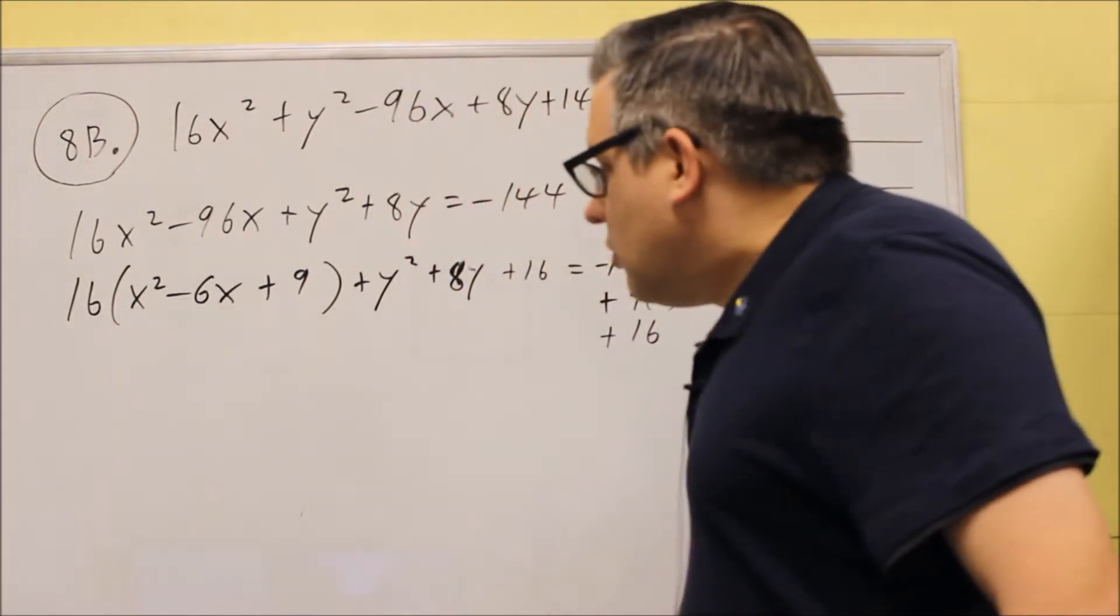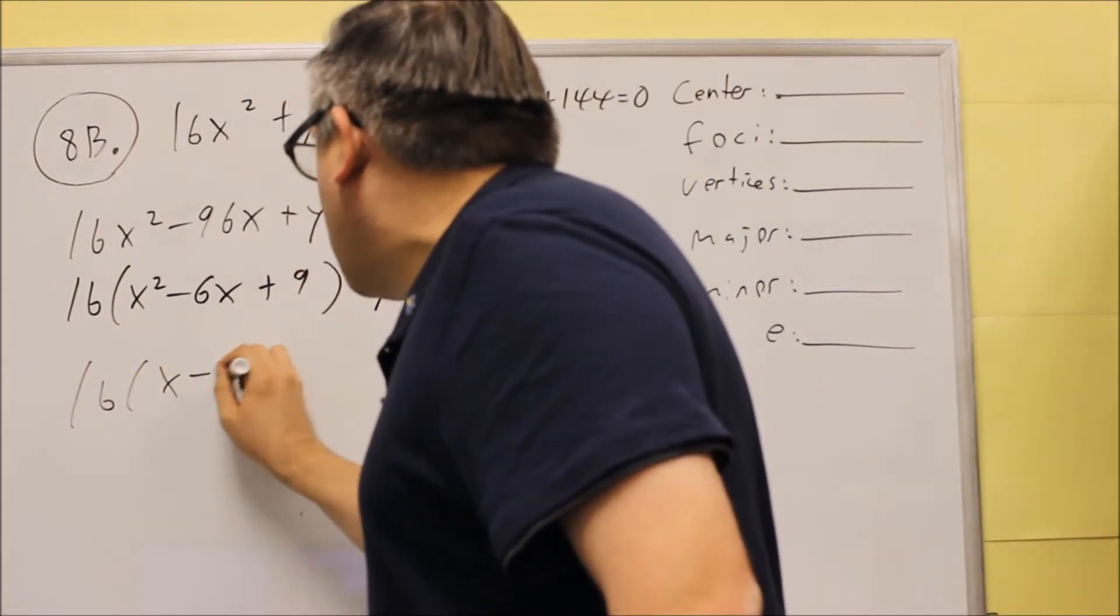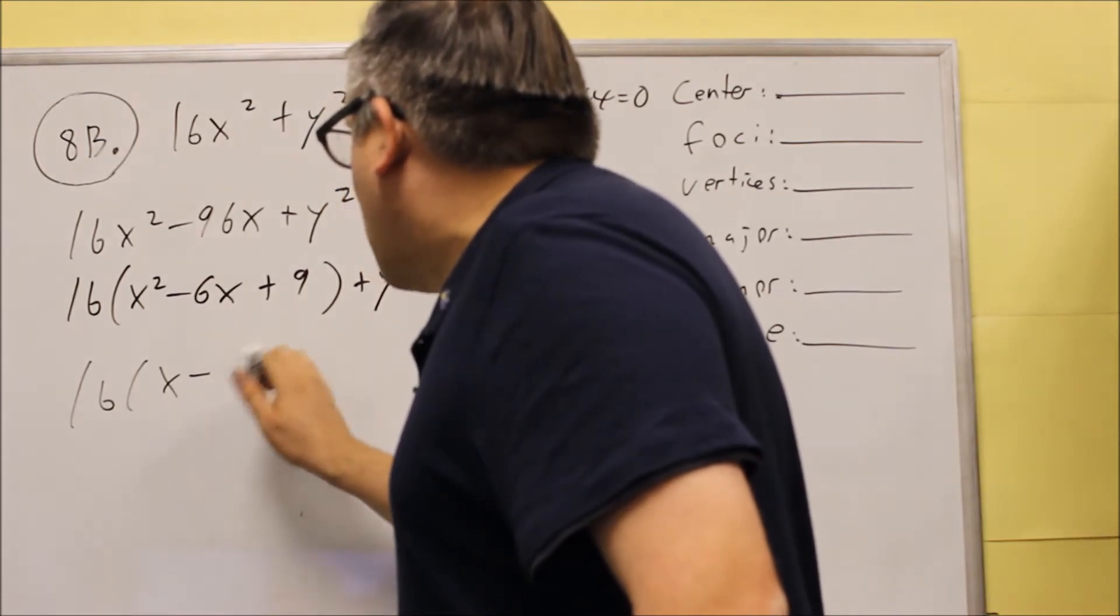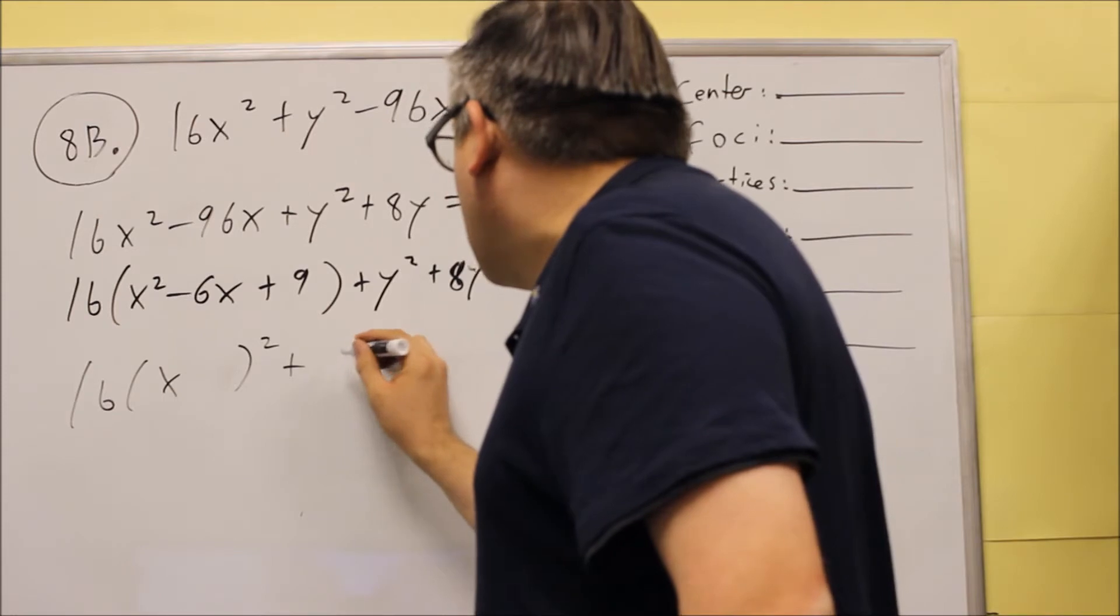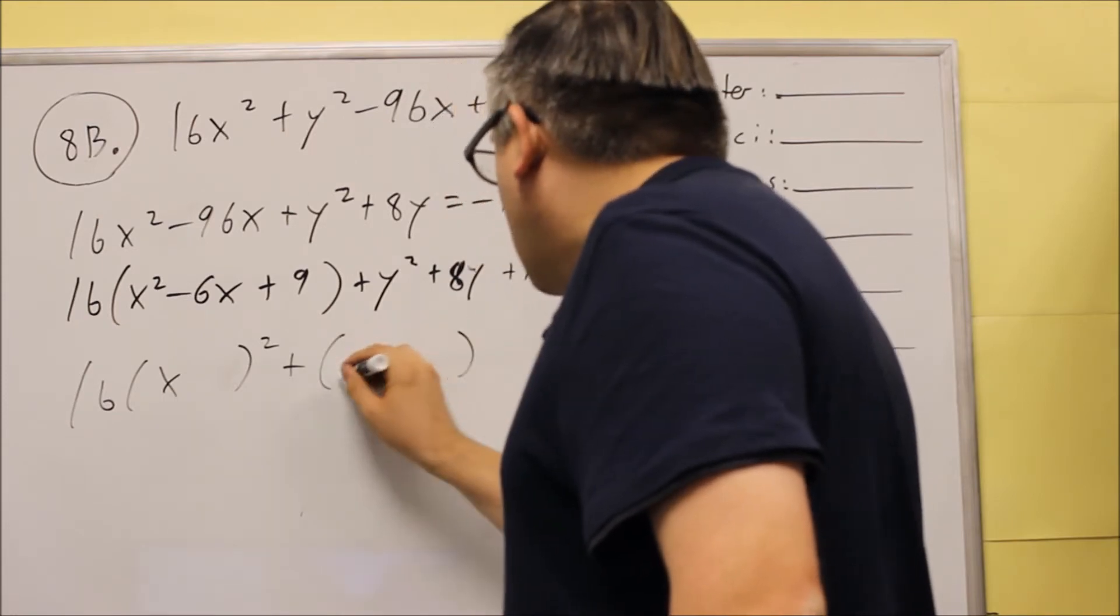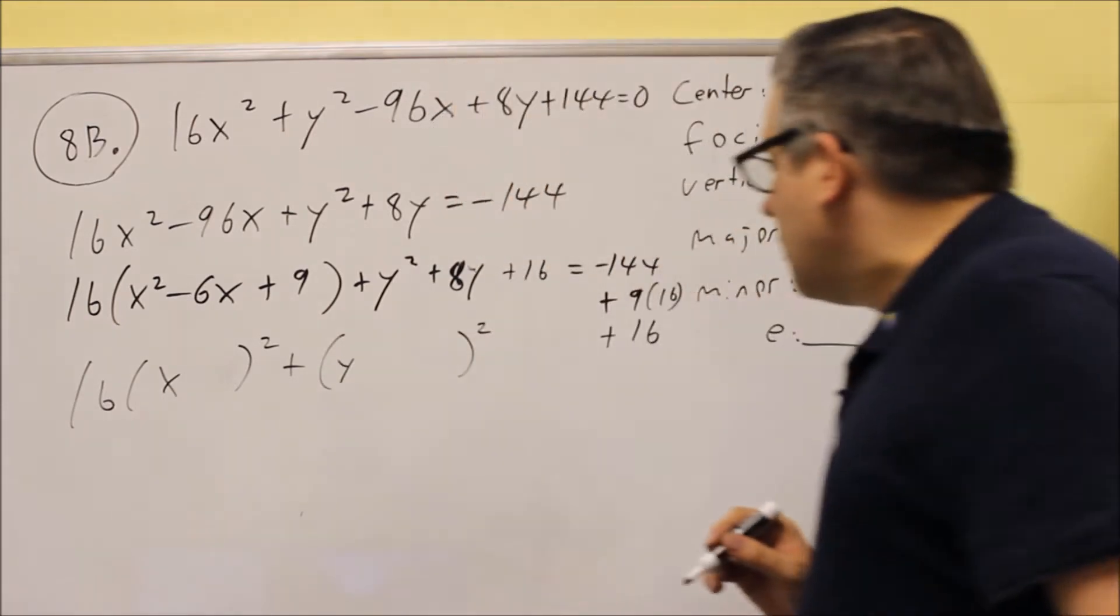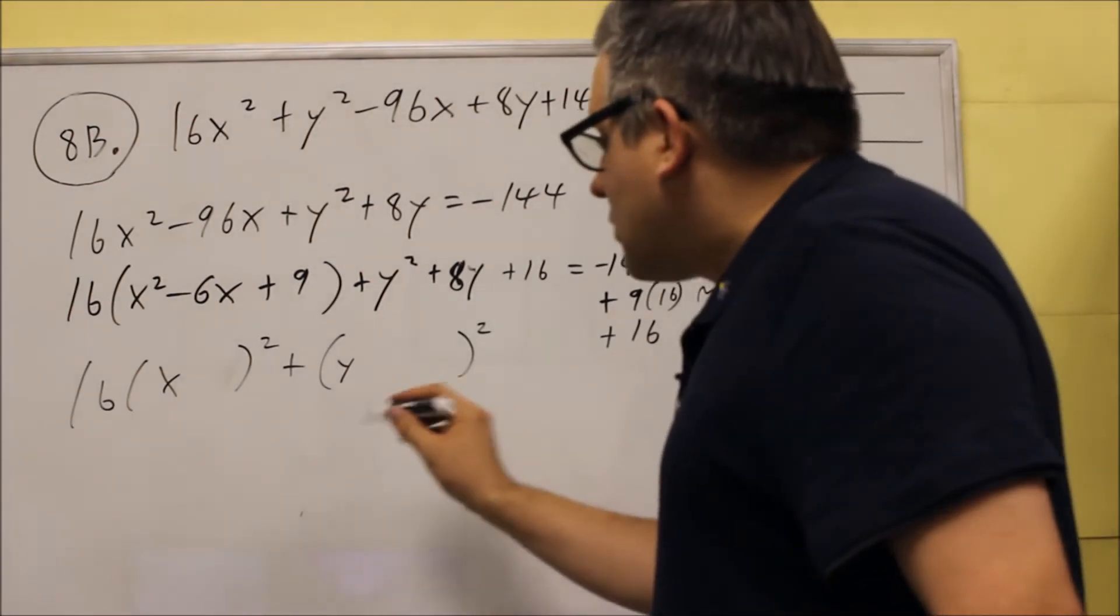Now we're ready to factor it. So we're going to do this. This is X minus, we'll have an X in here squared. And then this is going to be something with a Y squared.